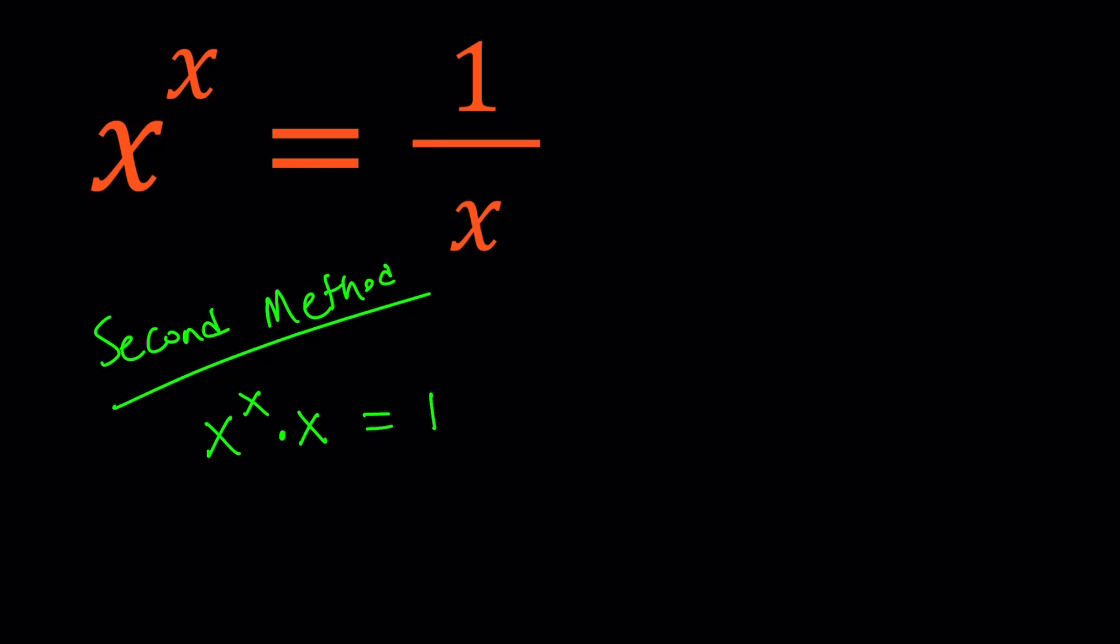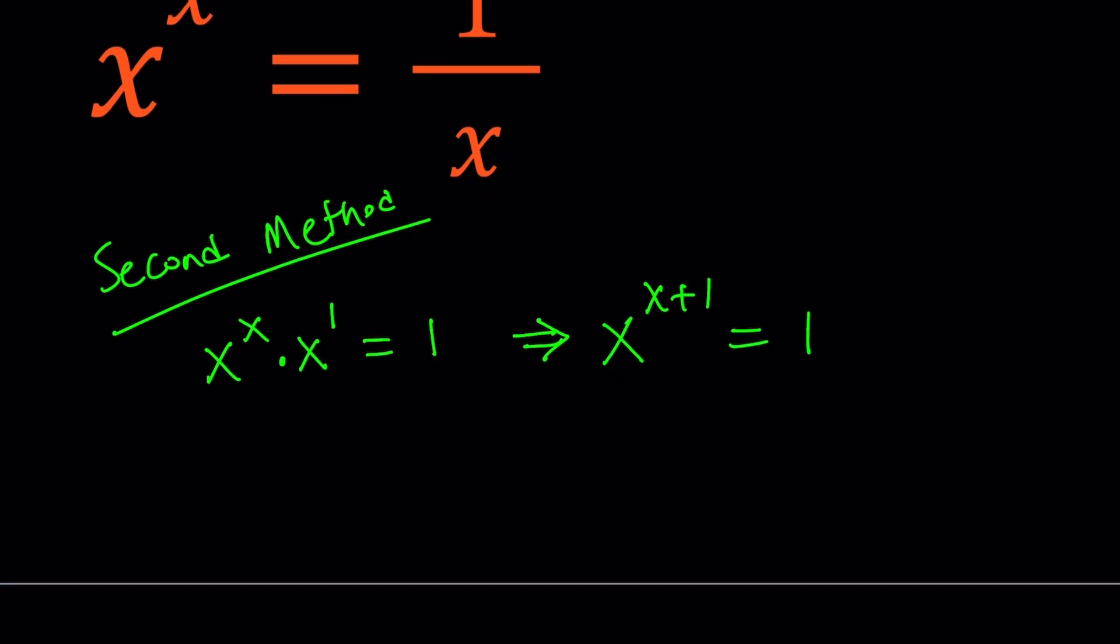Now x is the same thing as x to the power 1. So from here, if you add the exponents, you get x to the power x plus 1 equals 1. I know this is fairly simple, but I think if you're kind of new to exponential equations, this will be very helpful.